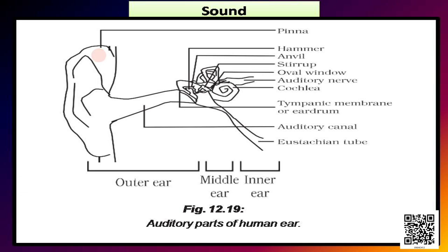The outer ear is called pinna. It collects the sound from the surroundings. The collected sound passes through the auditory canal. At the end of the auditory canal, there is a thin membrane called the eardrum or tympanic membrane. When a compression of the medium reaches the eardrum, the pressure on the outside of the membrane increases and forces the eardrum inward. Similarly, the eardrum moves outward when a rare fraction reaches it. In this way, the eardrum vibrates.